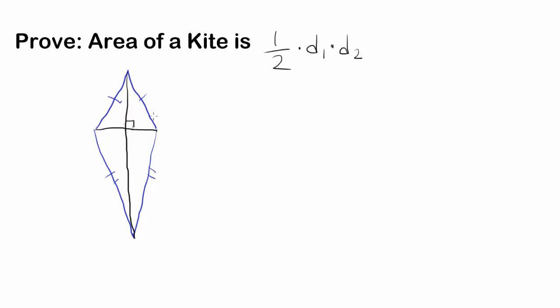So we have perpendicular diagonals, and we have one of the diagonals being D1. So let's call this red one D1. And the black diagonal, this one is going to be D2. So we want to prove that the area of the entire thing comes out to be 1/2 times the length of one diagonal times the length of the second diagonal.